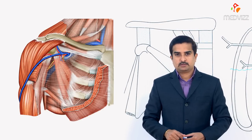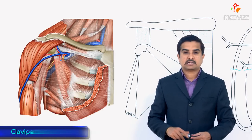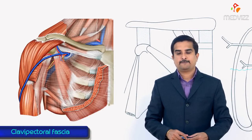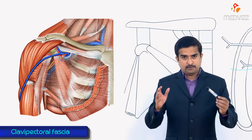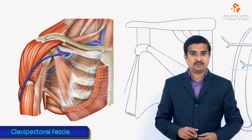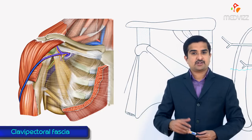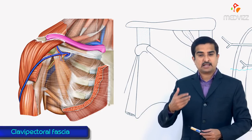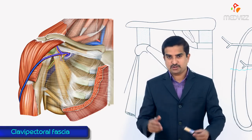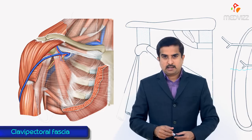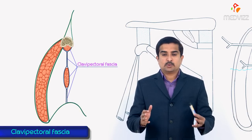In this module we are going to discuss the clavipectoral fascia. The name itself says that it is a fascia extending from the clavicle above down to the pectoral region.